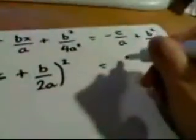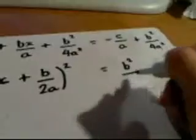And the right-hand side, I'm just going to reorganise. So I've got the b squared over 4a squared ahead of the minus c over a.